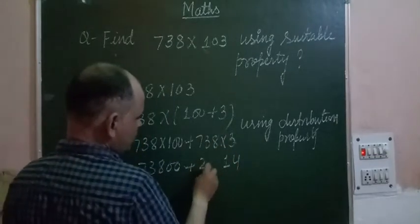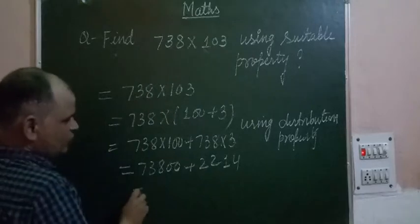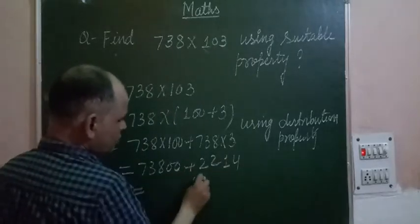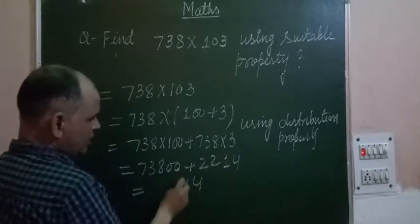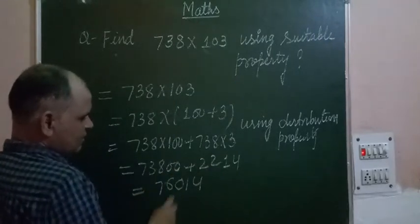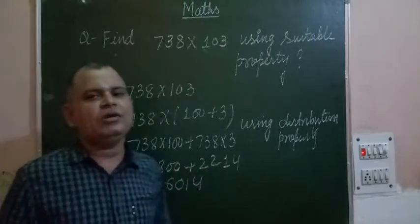So we add them: 4, 1 plus 1 is 2, 8 plus 2 is 10, carry 1. 3 plus 2 plus 1 is 6, and 7. So 76,014 is the answer to this question.